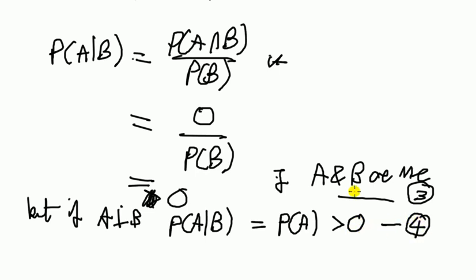And again, just like before, we can compare these two statements. Probability of A given B is zero if A and B are mutually exclusive. But if A and B are independent, then probability of A given B is bigger than zero. Well, they can't be both true.